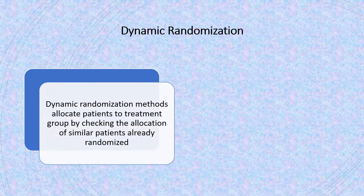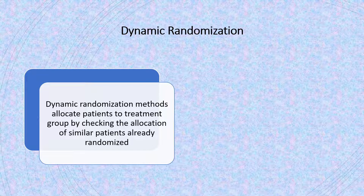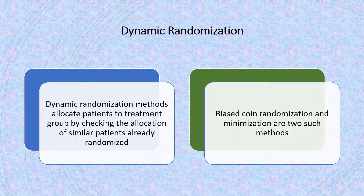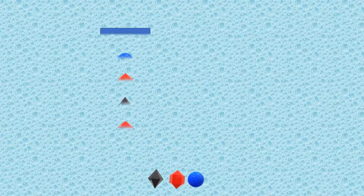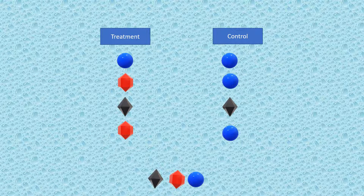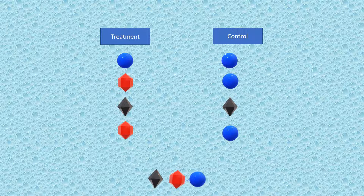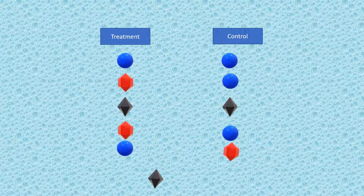Dynamic randomization methods allocate patients to a treatment group by checking the allocation of similar patients already randomized. Biased coin randomization and minimization are two such methods. The first participant is allocated a treatment at random. With minimization and biased coin methods, the next participant enrolled depends on the characteristics of those already enrolled. Different colors represent multiple factors. The aim is that each allocation should minimize the imbalance across multiple factors.